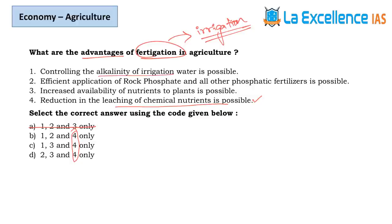Statement 1 — controlling alkalinity of irrigation: if we use more chemical fertilizers directly there is possibility of leaching and acidity, so with fertigation alkalinity can be reduced. Statement 1 is correct, so eliminate option D. Now I have to decide between options 2 or 3.